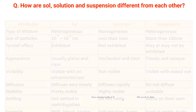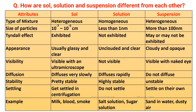The next question asks how sols, solutions, and suspensions are different from each other. We can differentiate them based on the following points: type of mixture, size of particles, Tyndall effect, appearance, visibility, diffusion, stability, settling, and examples. Using these properties, we can identify which one is a solution, suspension, or sol.